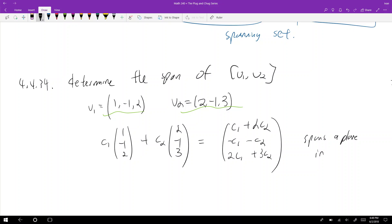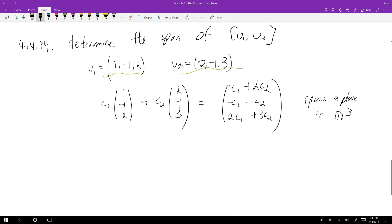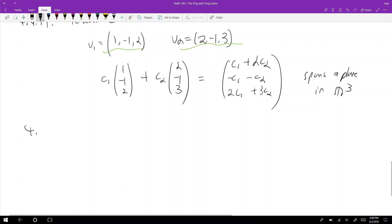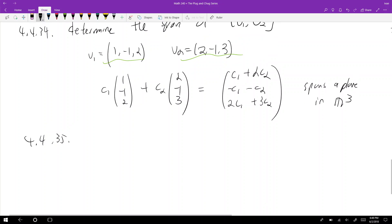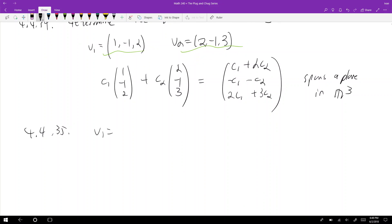So yeah, this spans a plane in R³. Okay, cool, super easy. The next one I'll do, another one, this is 4435, same type of problem. v1 now is equal to (1, 2, -1) and v2 is equal to (-2, -4, 2).